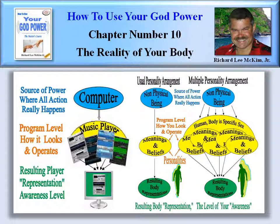What's so significant about this illustration is that in the usual personality arrangement, you have one set of meanings and beliefs. So all that means is you're always eliciting the same group of meanings and beliefs. If you created a whole other set of meanings and beliefs and were able to elicit them — which is a tricky thing to do — these multiple personality people did it under extreme duress: they were being sexually abused or somehow tortured or terrified, and they managed to split off like that. But if you were to change your meanings and beliefs, just like they do, you would have an immediate, different, resulting body representation.